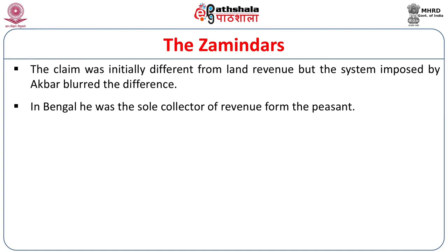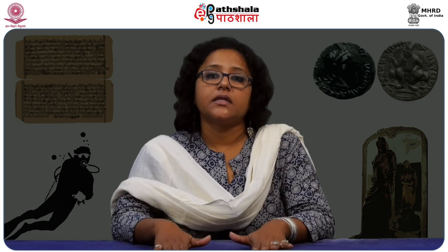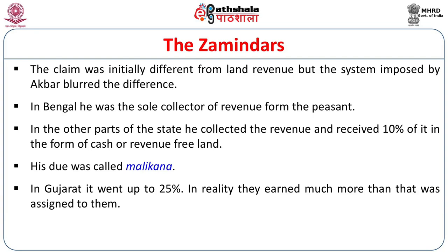So the claim made by the state and the claim made by the zamindar was not very clear to the peasant, adding to their problems. In Bengal, the zamindar was the sole collector of revenue from the peasant. In other parts of the state, he collected the revenue and received 10% of it in the form of cash or revenue-free land. His due was called Malikana. In Gujarat, it went up to 25%. In reality, they earned much more than was assigned to them.